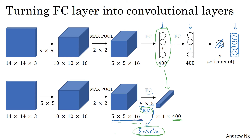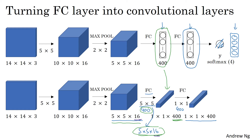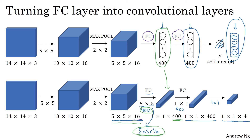Next, to implement the following fully connected layer, we use a 1 by 1 convolution. With 400 such 1 by 1 filters, the next layer will again be 1 by 1 by 400. Finally, we use another 1 by 1 filter followed by a softmax activation to give a 1 by 1 by 4 volume, taking the place of the 4 numbers the network was outputting. This shows how you can take fully connected layers and implement them as convolutional layers, so those sets of units are now represented as 1 by 1 by 400 and 1 by 1 by 4 volumes.